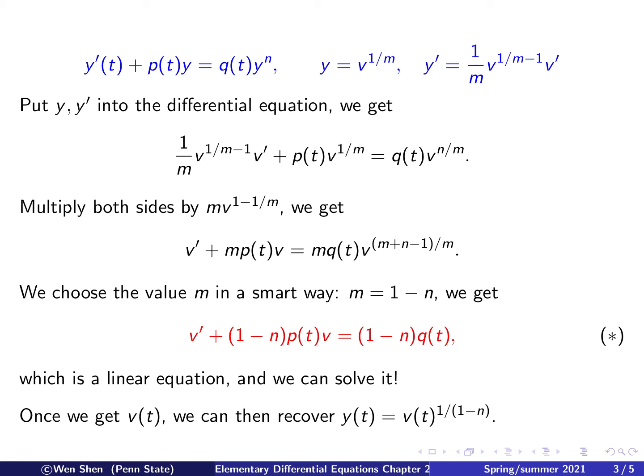And once v is solved, then we can recover the y, which is our original unknown, by this relation. y is v to the power 1 over 1 minus n. So this is the general algorithm, the derivation of it. Next, we'll take an example.